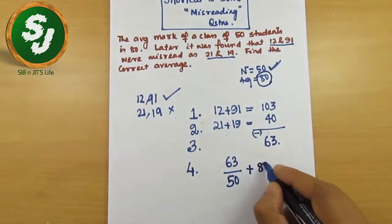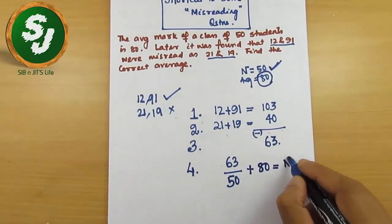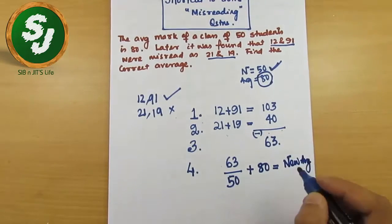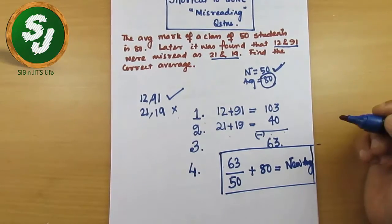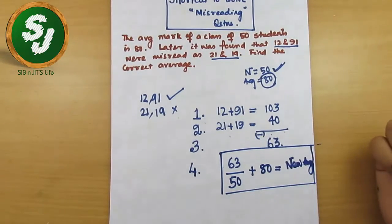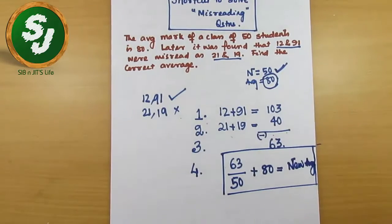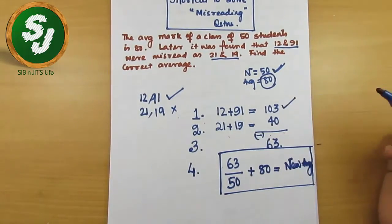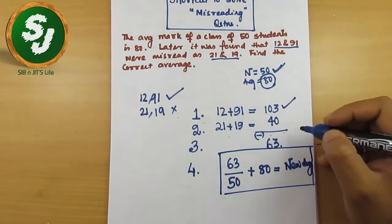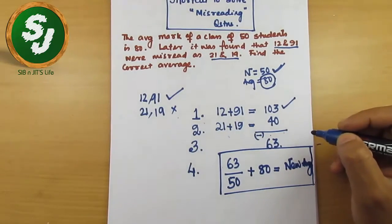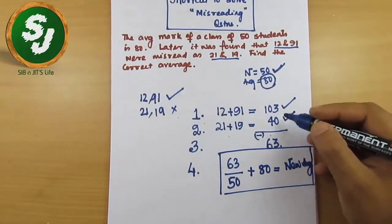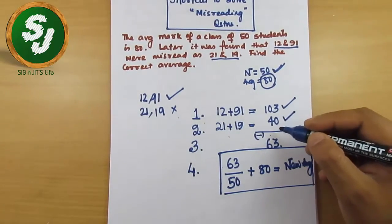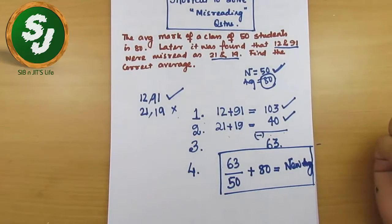I will repeat all this information once again and you have to know the shortcut. First, add up the correct marks: 12 plus 91, this is 103. Then in the second step, add up the wrong marks: 21 plus 19, so this is 40. Now in step three, subtract these two: 103 minus 40. This number can be negative as well, don't worry about it. Whatever number it comes, you just have to record it. 103 minus 40, so this is 63 in this case.